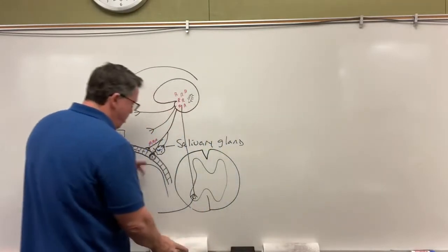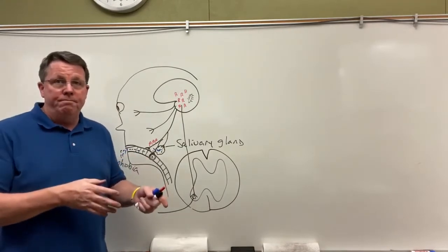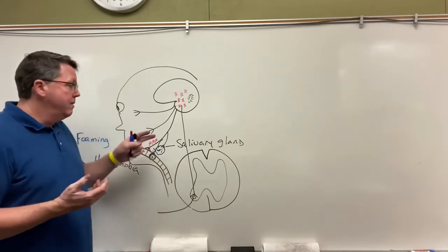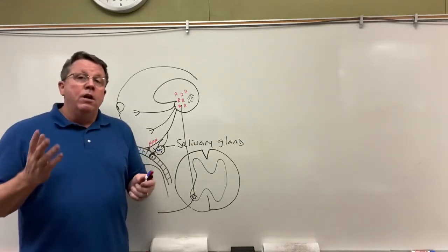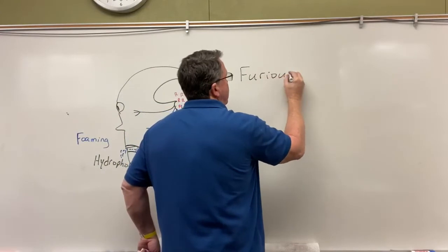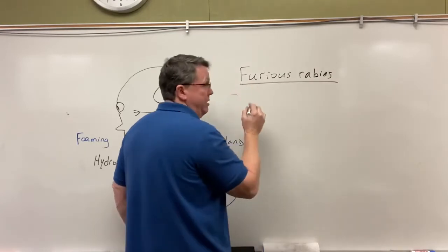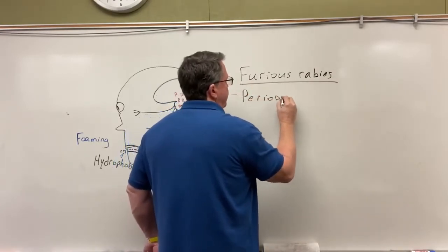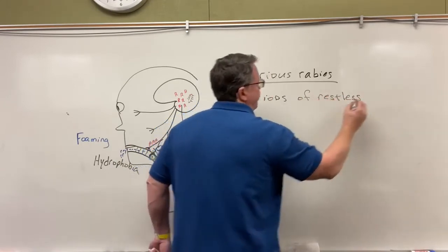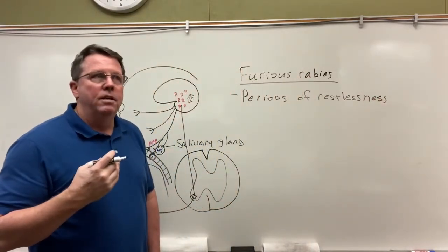Patients will also alternate between periods of calm, when everything seems fine, and then become severely agitated — screaming and yelling. This is called furious rabies, which is the type most likely to affect people. It includes periods of restlessness alternating with severe agitation.